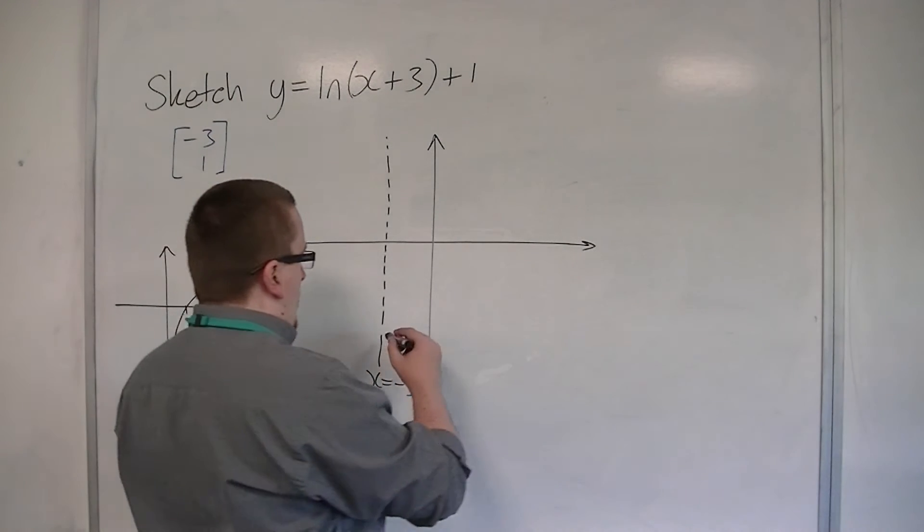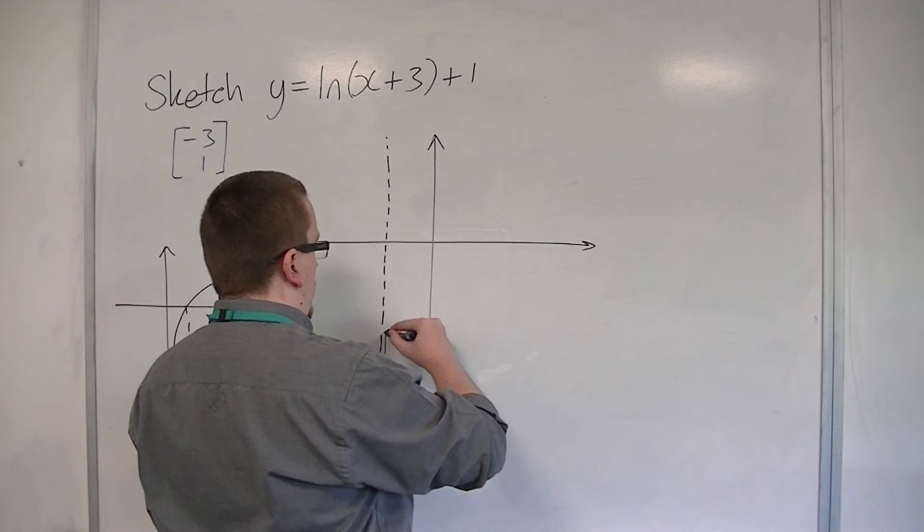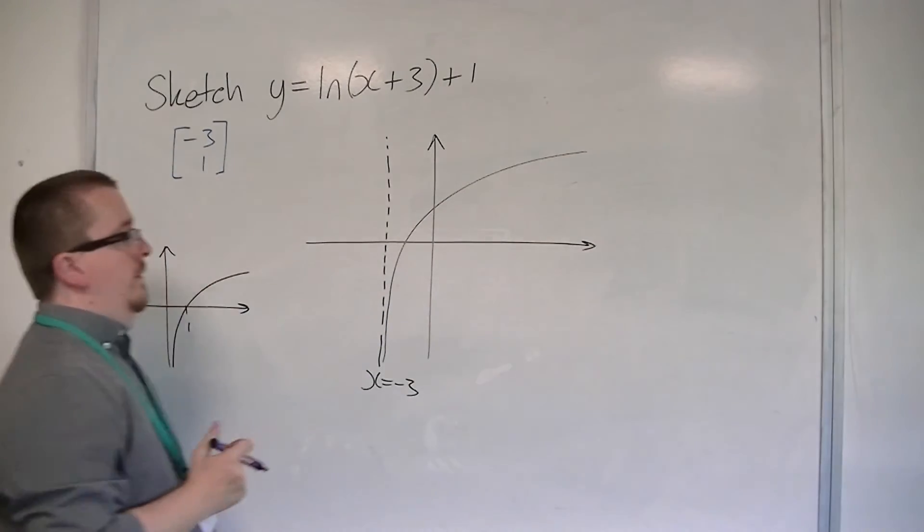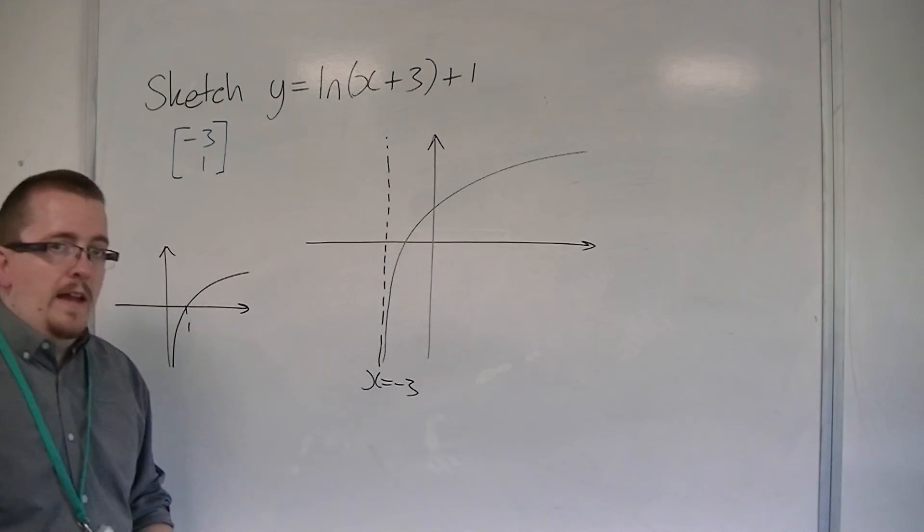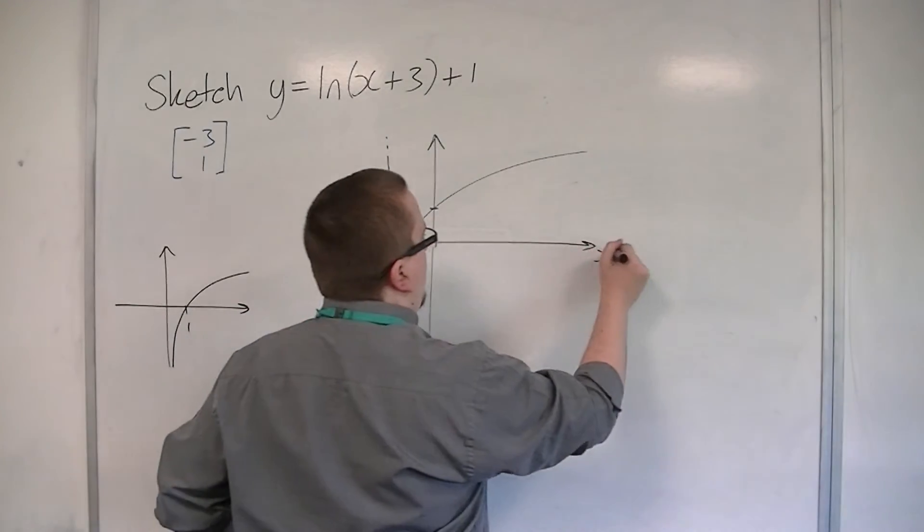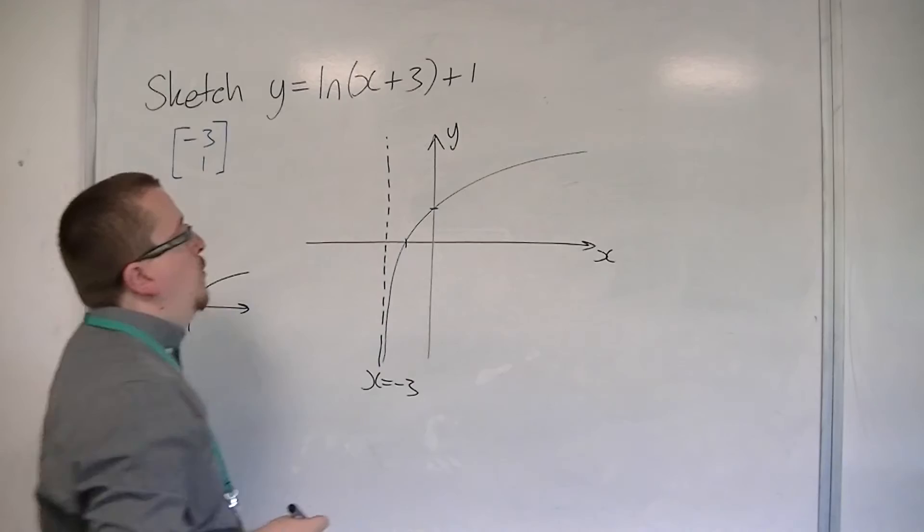Now, that means that the curve will increase upwards and then like so. It would look like that. So there are two points that we really want to find: where it's crossing the x-axis and where it's crossing the y-axis.